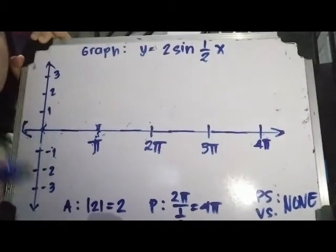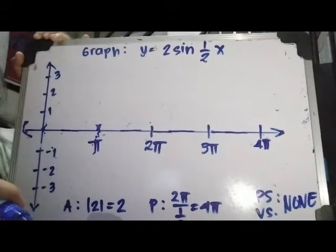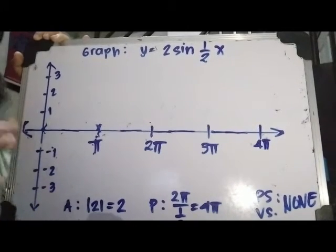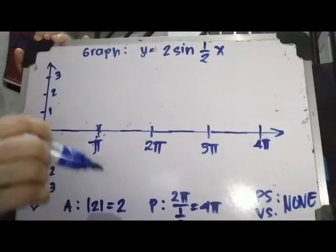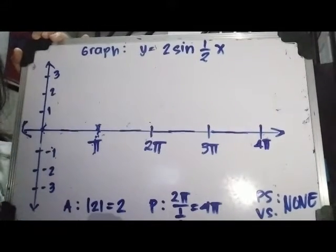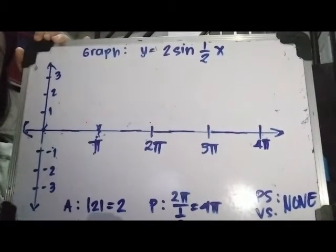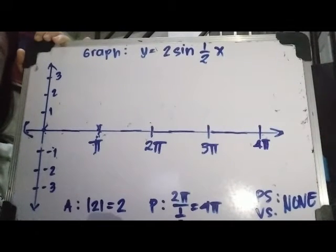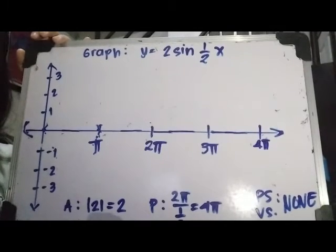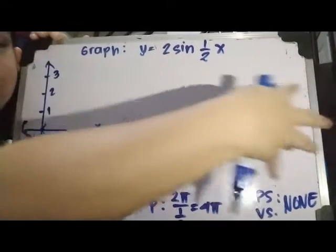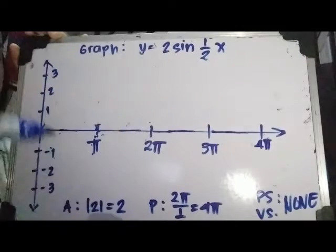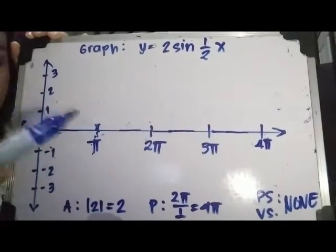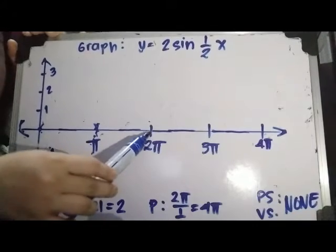For the phase shift and vertical shift, there is still none. So let's start graphing. How do we change the period of the graph? We know that the height of our peak and the depth of our trough will be 2 units from the center line. Before we do that, let's consider our period, because it will affect whether the wave will stretch or compress. From 2π, we know that the parent function should have a wave which would end at 2π.